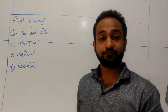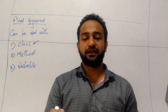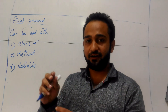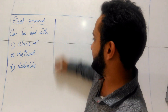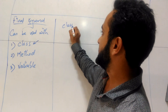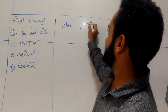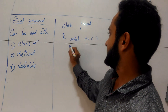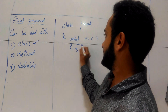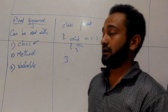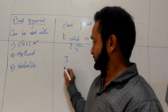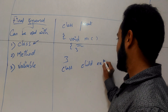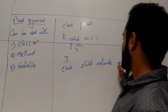Final keyword with a class: if you make any class as final, that class cannot be inherited. So suppose if I have my class as a parent class, and I am defining this class — class Parent — and I have one single method in it, void m1, and I am closing this class. Now I have one more class, class Child.